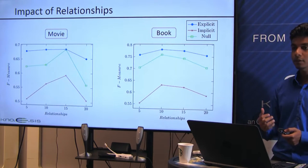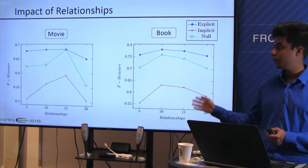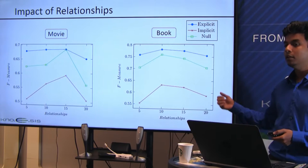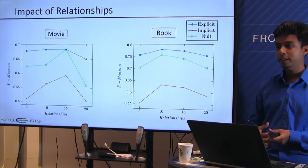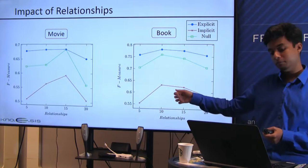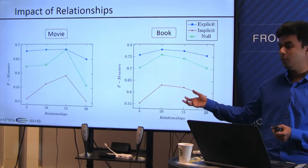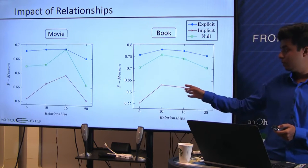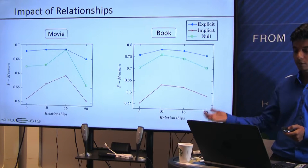We studied the impact of the top-K relationships selected from DBpedia. Using top 5 gives low F-scores due to fewer domain-relevant entities. Moving to top 10 improves performance. At top 15, movies improve and books drop only marginally by 0.001. At top 20, scores decline because noisy entities like United States are introduced as domain-relevant. Therefore, we use top 15 relationships.